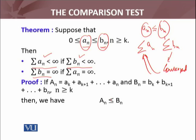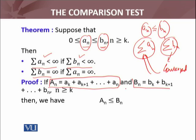Let's see the proof. Proof ke liye we have considered the sequences of partial sums of both of these series a_n and b_n. In dono series ka sequence of partial sum humne consider ki hai. Sequence of partial sum mein pata hai kya hota hai — a_n equals this for the first series and b_n equals this for the second series whenever n is greater than or equals to k. Yeh n ≥ k wali condition is liye a rahi hai ki humari series ki terms jo hain woh non-negative iske baad hoti hain. Then the sequence of partial sum a_n will be less than or equals to b_n because we have a_n ≤ b_n for all n.